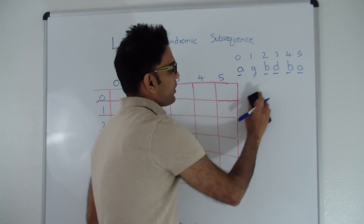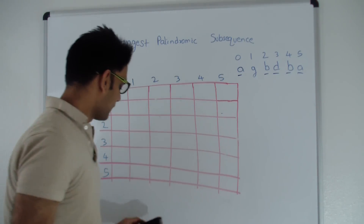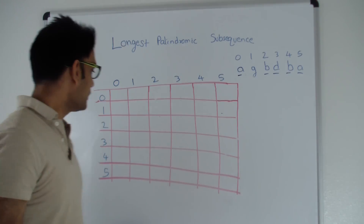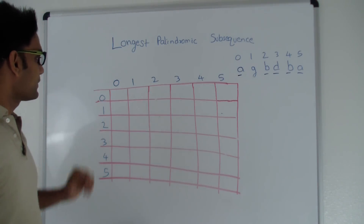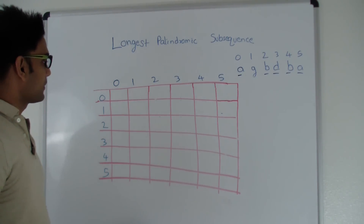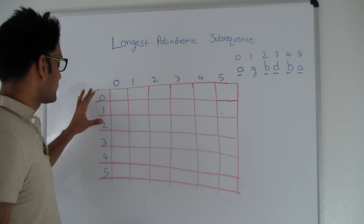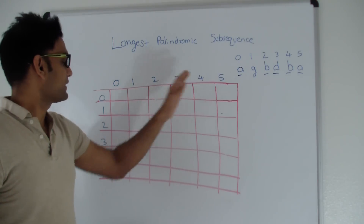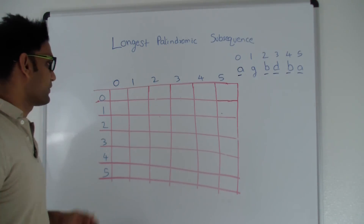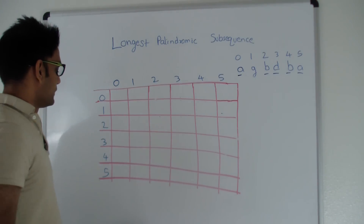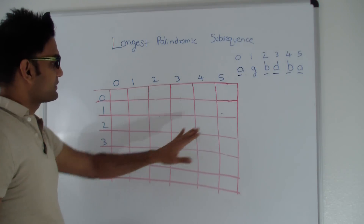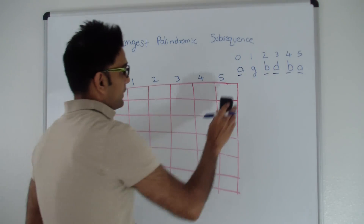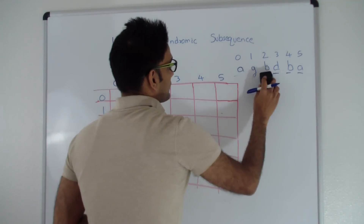So how do we solve this problem? We will use dynamic programming to solve this question. I have a 2-dimensional matrix here of the same length as the original string — a 6 cross 6 matrix. We are going to fill up this matrix and we'll have the final result right here.